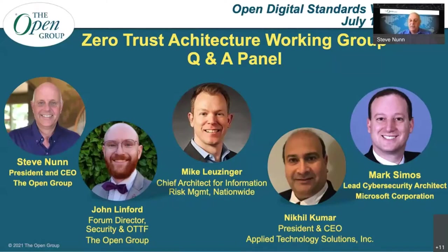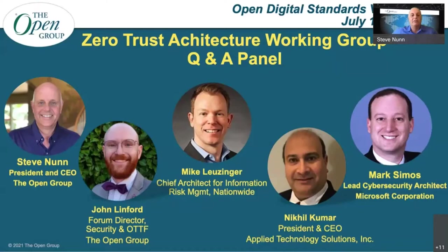Moving on to more questions. A question came in very early: should I read too much into the different expressions of zero trust — zero trust, zero trust architecture, zero trust network architecture — and related activities with names like software-defined networking, software-defined perimeter? Any comments on the various versions of zero trust with something after it or on its own? Anyone want to take that one?